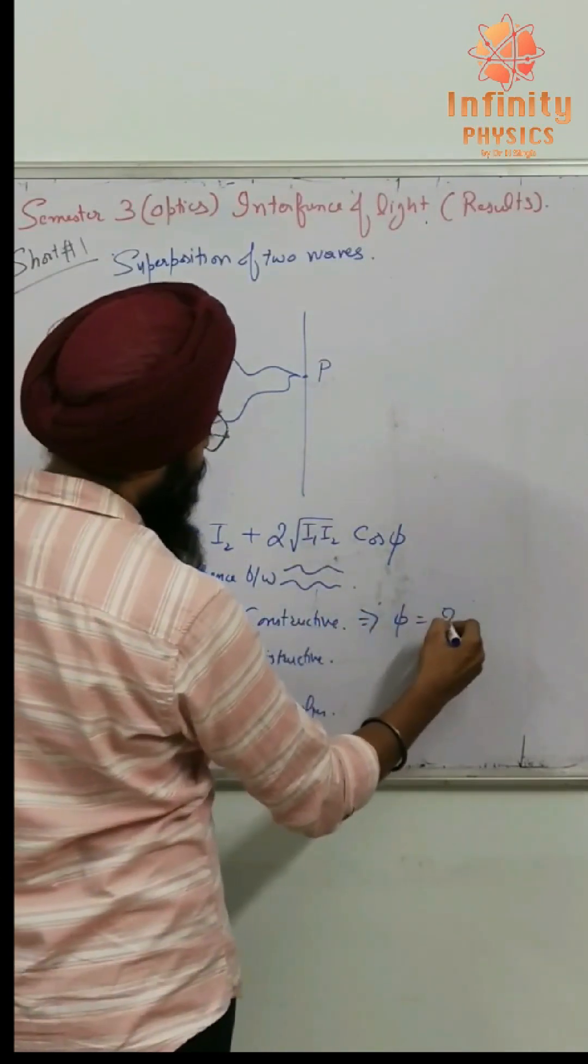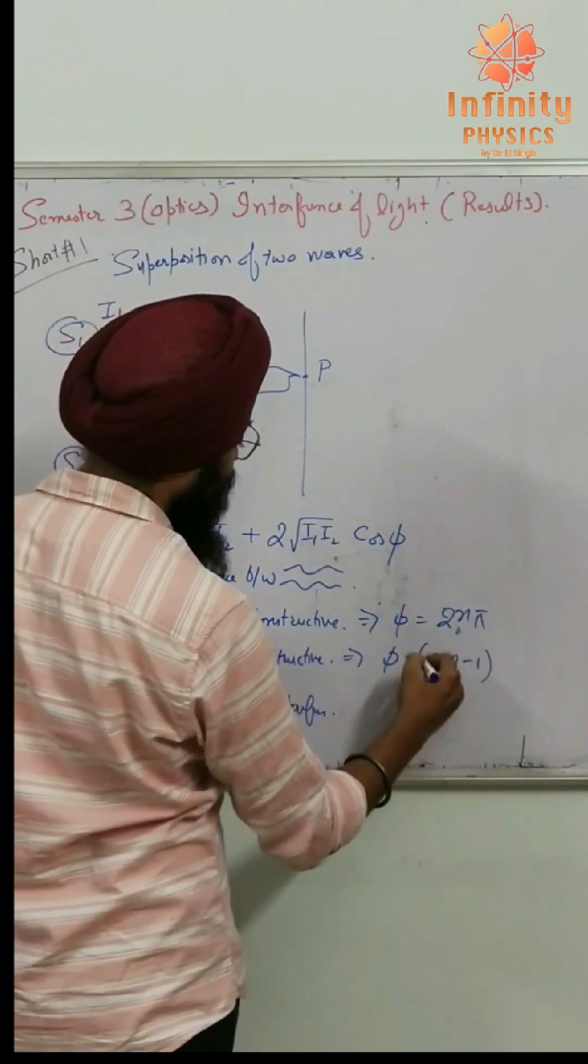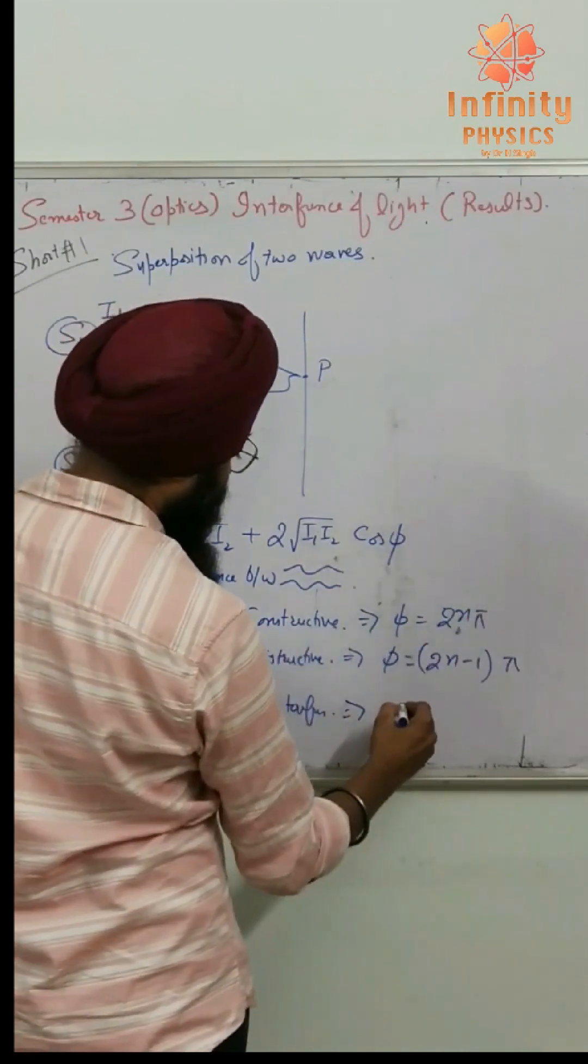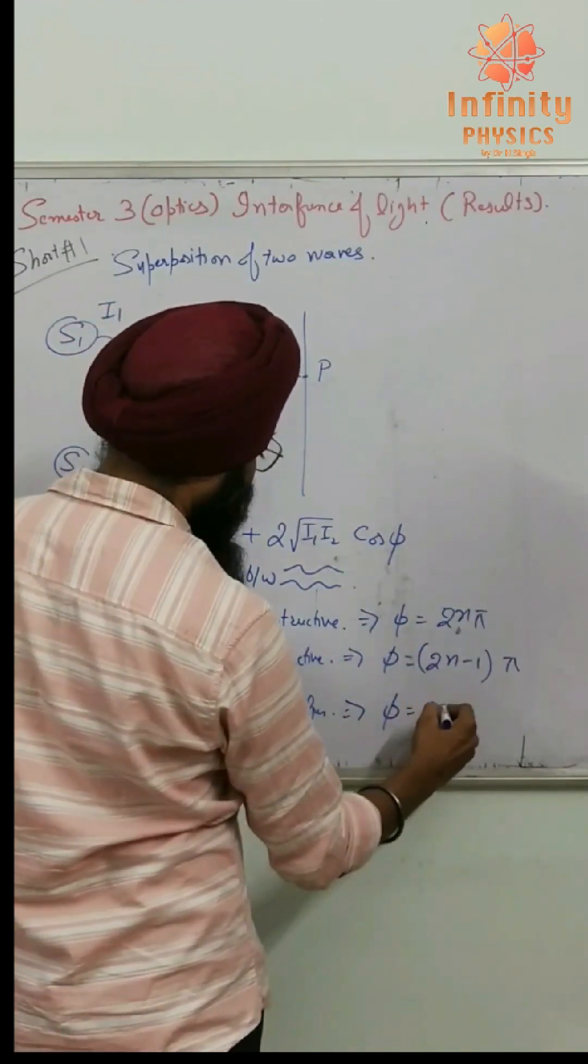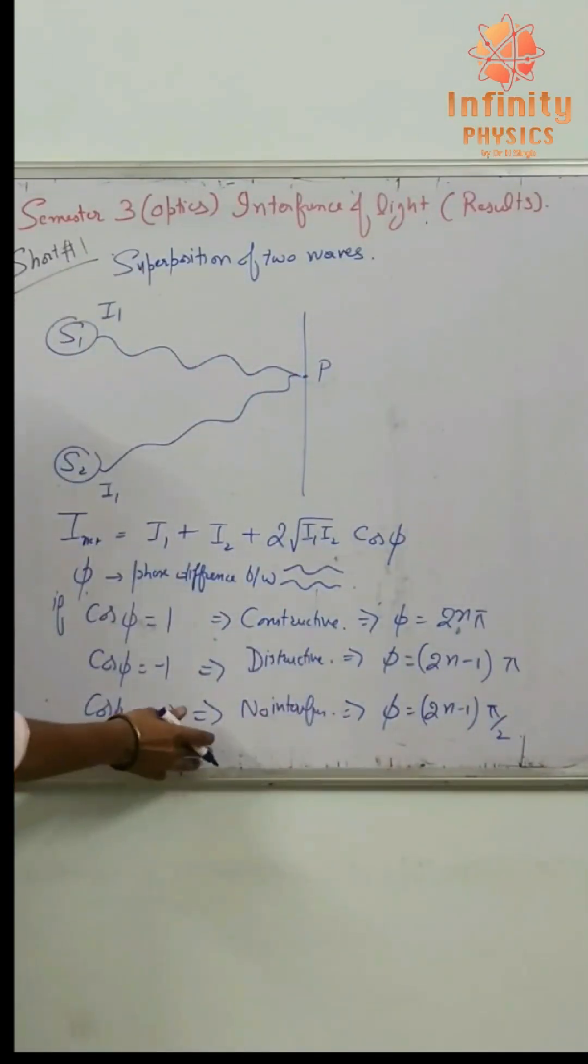Cos phi equals 1 comes at phi equals 2n pi. Minus 1, phi will be (2n+1)pi. And here phi will be (2n+1)pi by 2. So these are the conditions for constructive, destructive, and no interference.